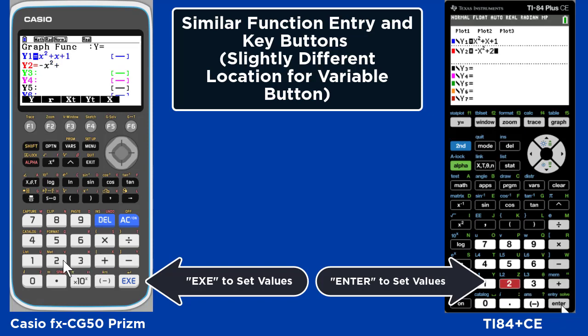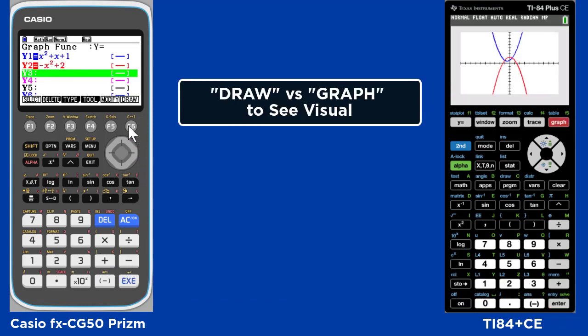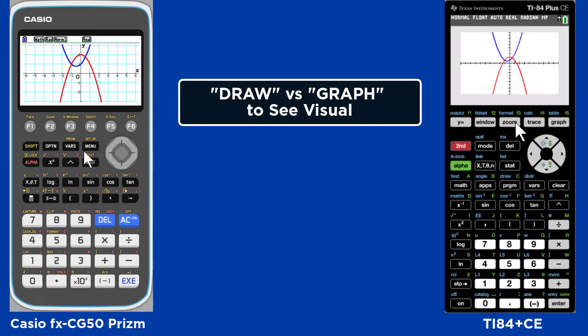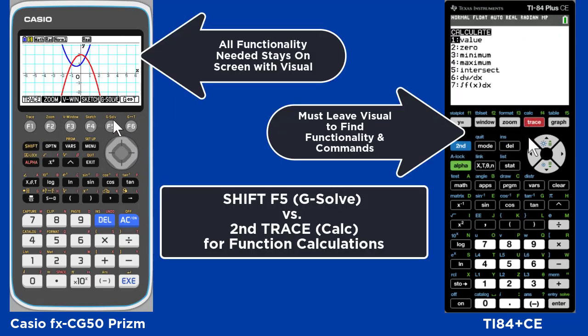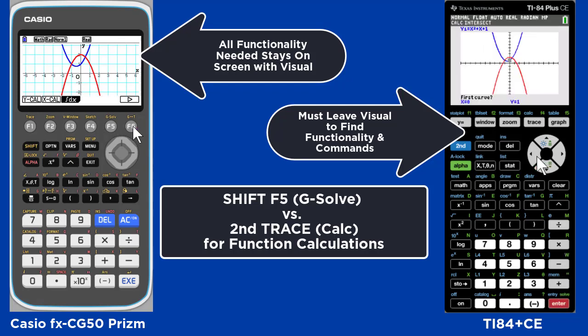When you're ready to graph, on the Casio you're going to hit F6 for Draw and Graph for TI. You'll notice that all the functionality you need stays on the screen in the Casio version, whereas you must leave the visual and find functionality and commands on the TI.